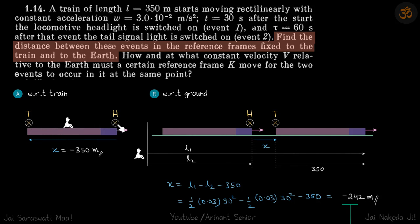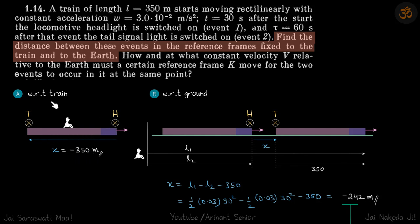The distance between the two events is minus 350 meters — that is, the displacement from final to initial event. The final event is when the tail light is turned on, and the initial event is when the headlight is turned on. So final event minus initial event gives a displacement of minus 350 meters with respect to the train.